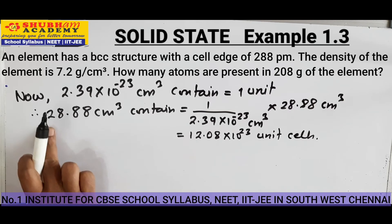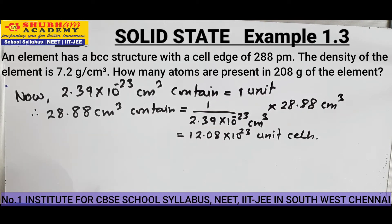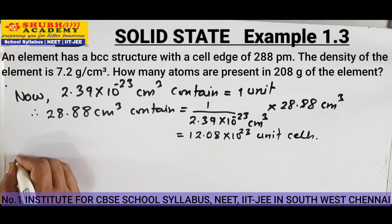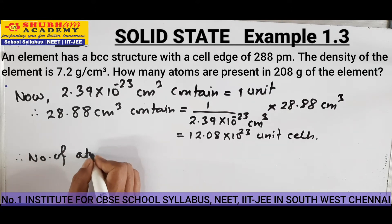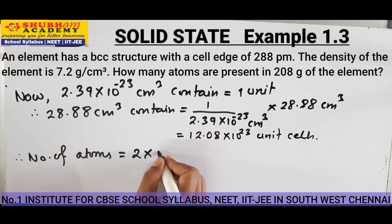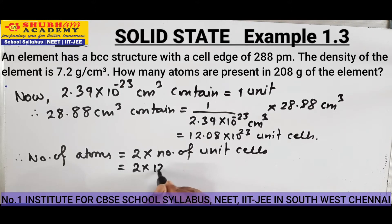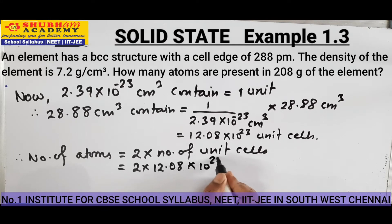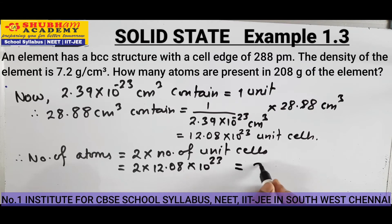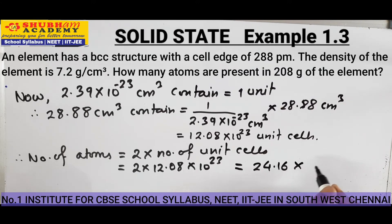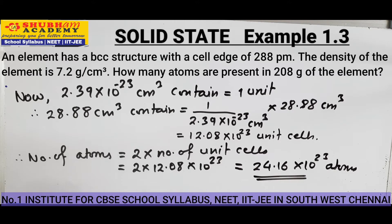That means this much volume contains these many unit cells. Therefore, number of atoms is equal to 2 into number of unit cells, which is 2 into 12.08 into 10 to the power 23. This gives 24.16 into 10 to the power 23 atoms. So 208 gram of the element contains 24.16 into 10 to the power 23 atoms.